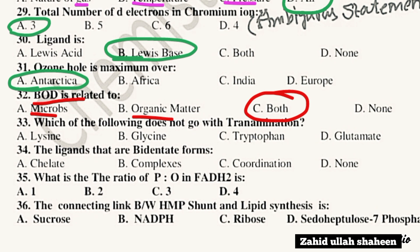Question 33: Which of the following does not go with transamination — take option.